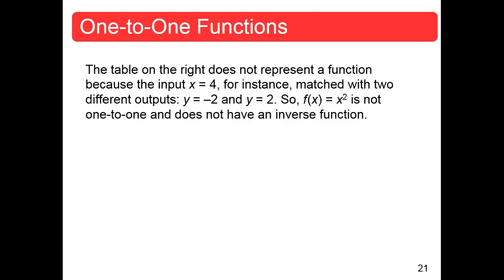That table on the right does not represent a function because the input 4 gave two outputs: −2 and +2. So did 1, giving +1 and −1. The function f(x) = x² is not one-to-one, does not have an inverse, and fails the horizontal line test — unless you restrict the domain.